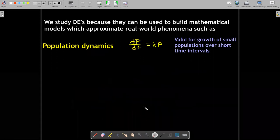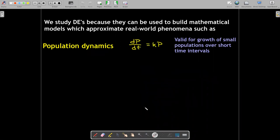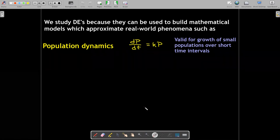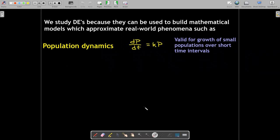So some of the things that we've seen before, population dynamics. This simple model assumes that the rate of change in the population is proportional to the amount of population that you have. So this neglects many things, if nothing else the rate at which people die, the rate that people may enter or leave the population for other reasons. But this still is a valid model for growth of small populations over short time intervals.